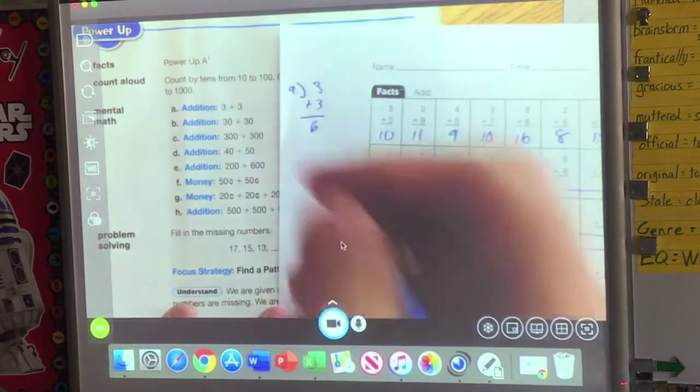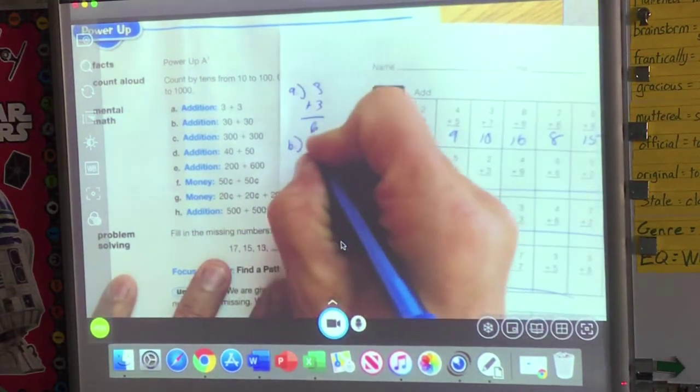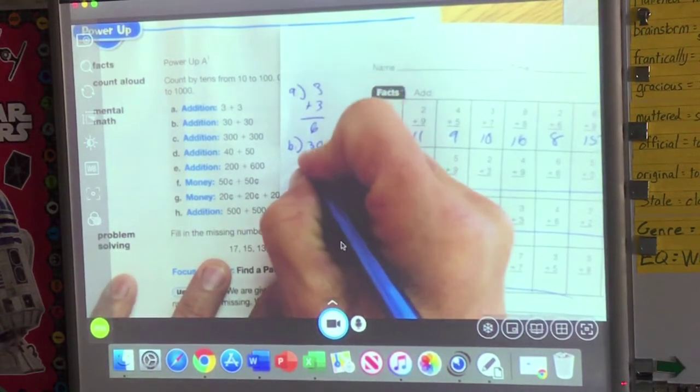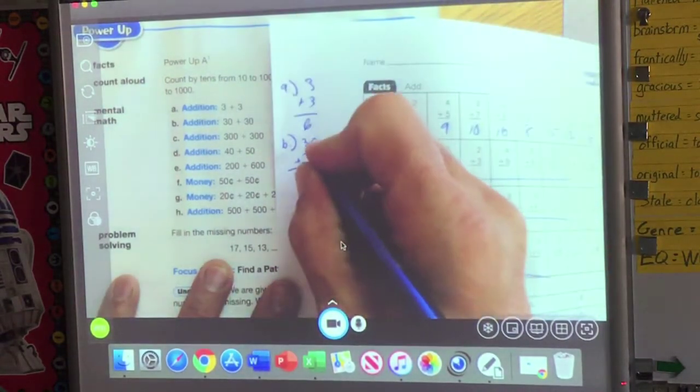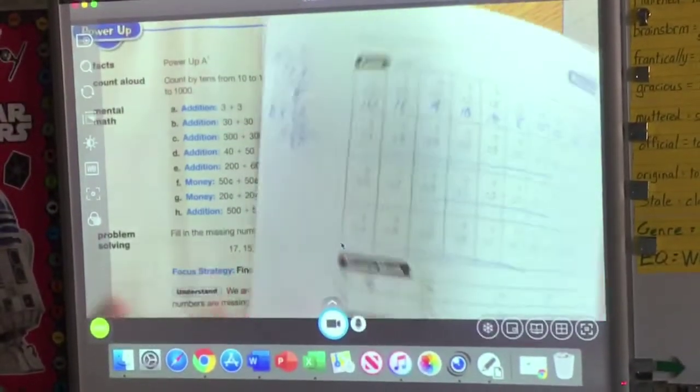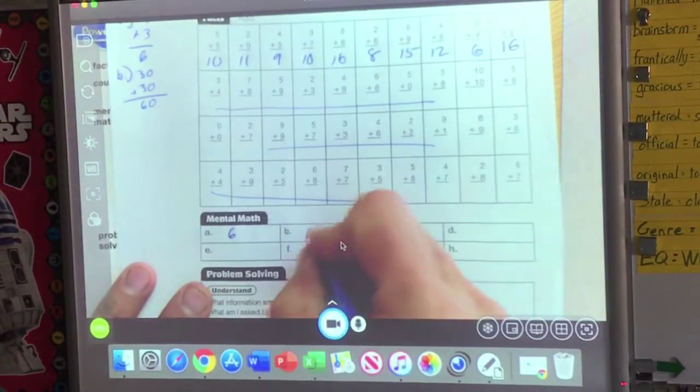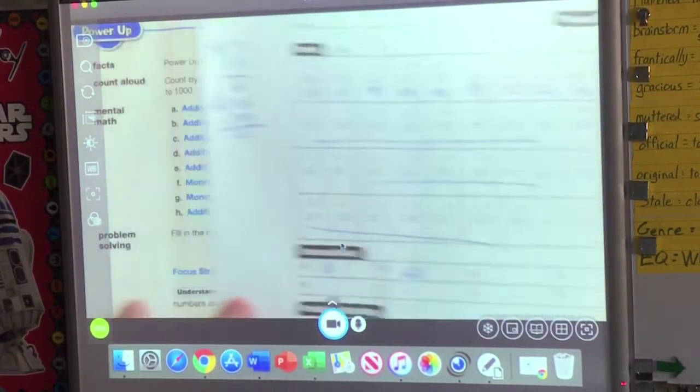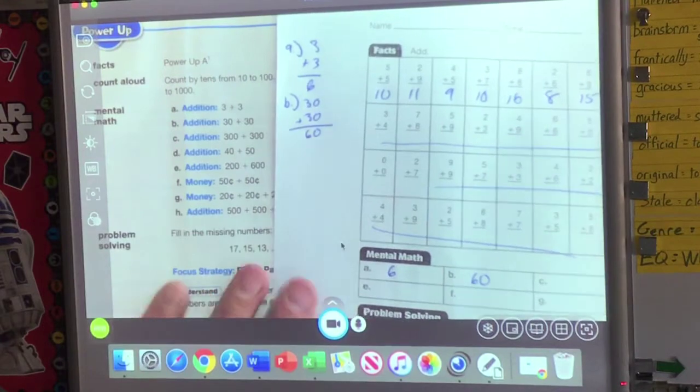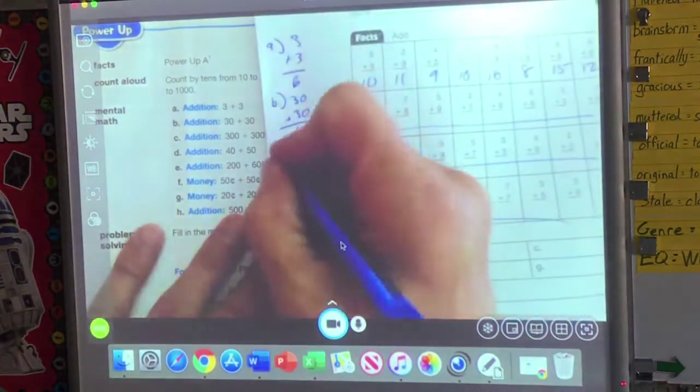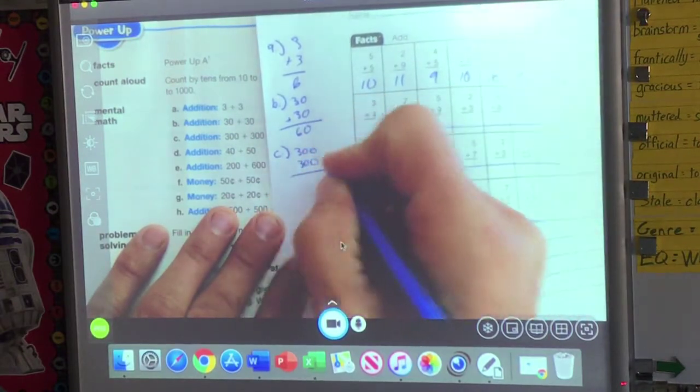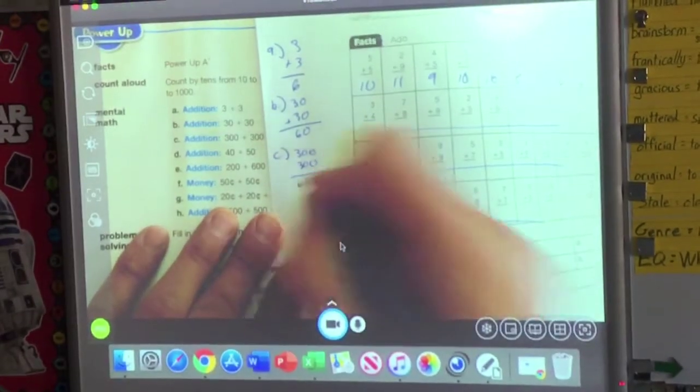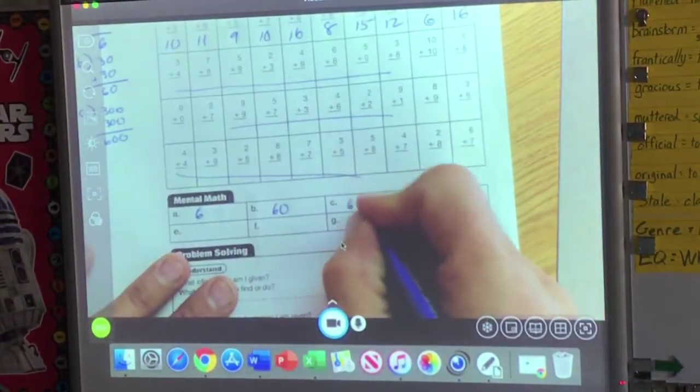Let's move on to B. B says 30 plus 30. So I'm going to stack it up. 30 plus 30. We start in the ones column. We add zero plus zero is zero, and three plus three is six, and our answer is 60. So we go and we put it in our answer key. C. We're cruising now. It's 300 plus 300. You're probably seeing the pattern here. All we did was add some zeros, and we came up with 660, and now 600.